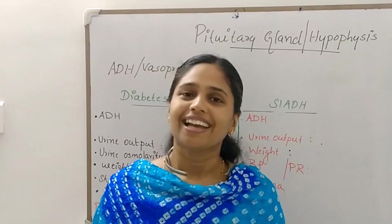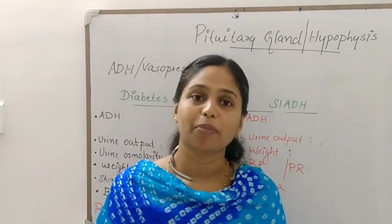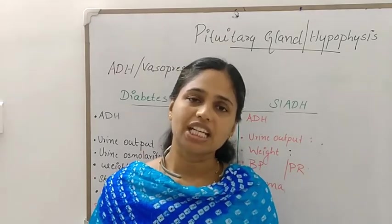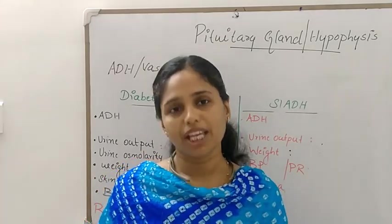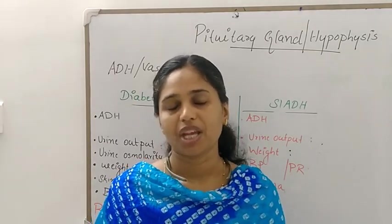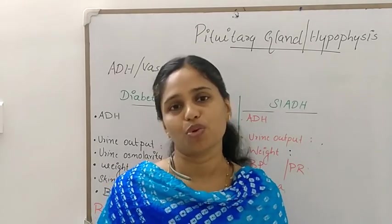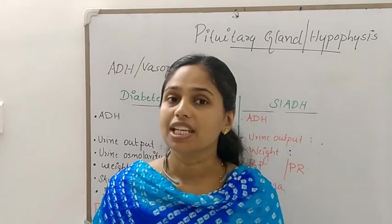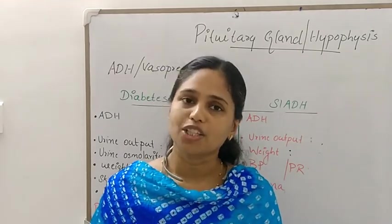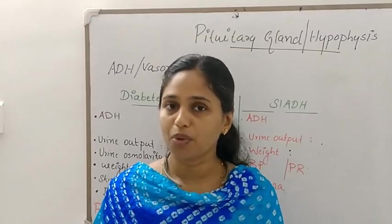Hi all. We are going to discuss the endocrine disorder — pituitary gland disorder. The pituitary gland is situated at the base of the brain. It is also known as the hypophysis. The pituitary gland has two lobes: anterior and posterior. The posterior lobe hormones are ADH or vasopressin and oxytocin. These two hormones are produced by the posterior pituitary.